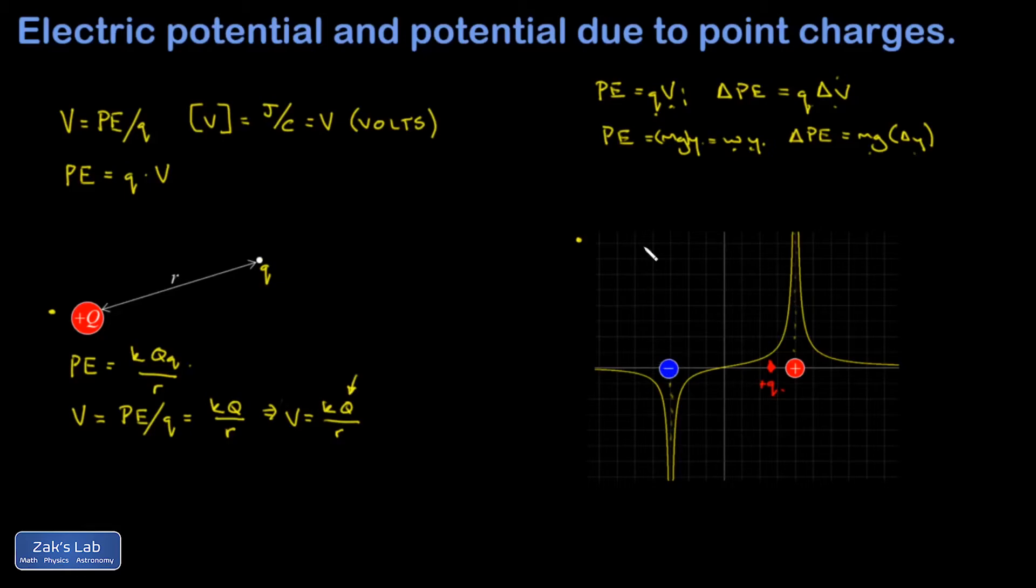One final complication of this electrostatic landscape analogy is that electrostatics is twice as complicated as gravitation because we have two different flavors of charge, but only one flavor of mass. So I could ask myself, what happens if I put an electron in this landscape?